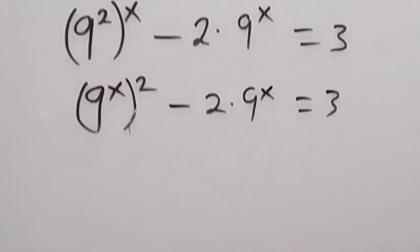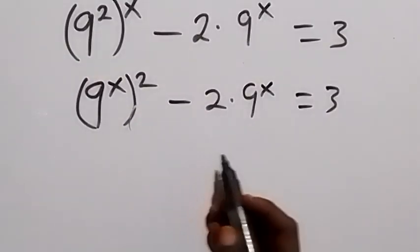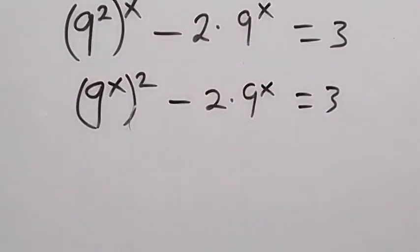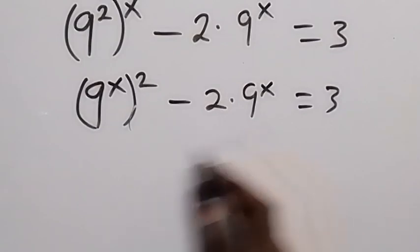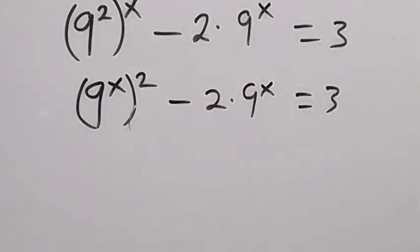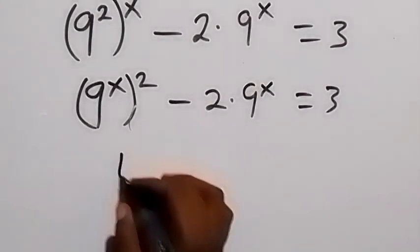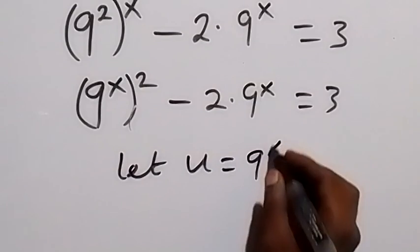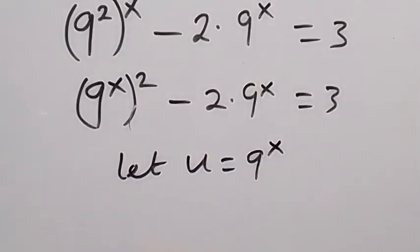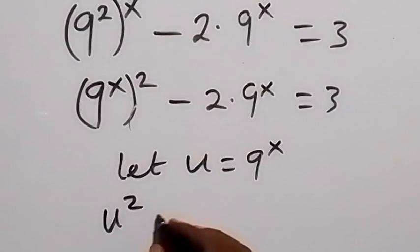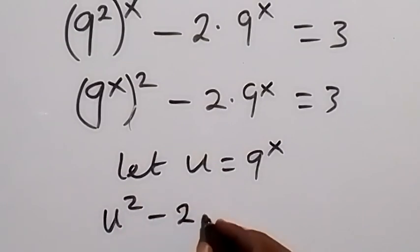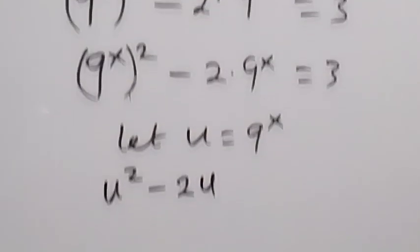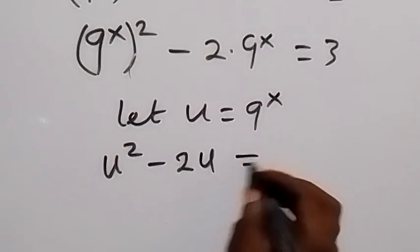Now, from here, we have 9 raised to power x appearing multiple times. So we can use a letter to represent that. Let u be equal to 9 raised to power x. Then, when we write this again, we are going to have u squared minus 2 times u, that's 2u, then equals to 3.